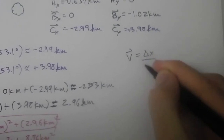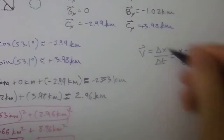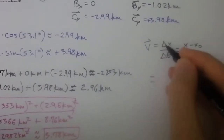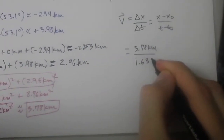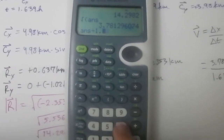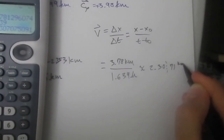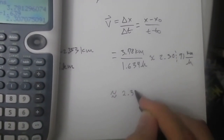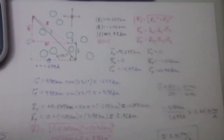Now, to find the average velocity: average velocity equals displacement over time elapsed, or (x minus x₀) over (t minus t₀). The displacement we just solved is 3.78 kilometers and the total time is 1.639 hours. Dividing gives us approximately 2.31 kilometers per hour. And that is how you do this problem.